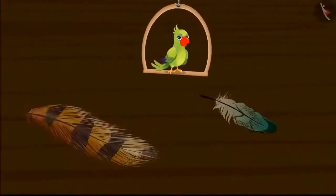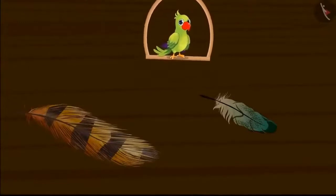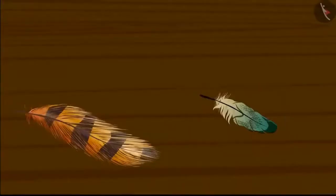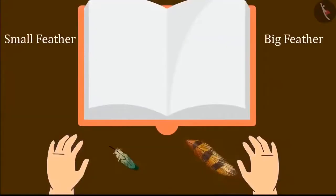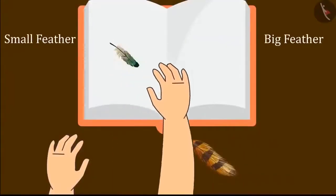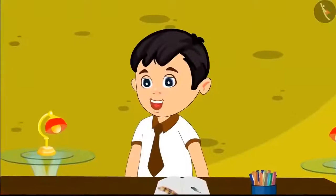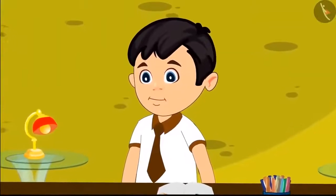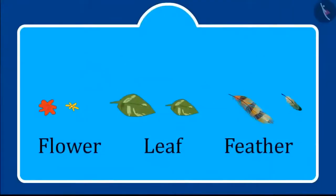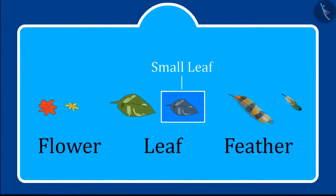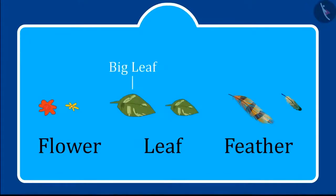Children, can you tell which one of these feathers is shorter? This is a small feather — I will paste small feather here. And now I will paste this big feather here. You saw how Chotu recognized big and small things: this is a small flower and this is a big flower; this is a small leaf and this is a big leaf; this is a small feather and this is a big feather.